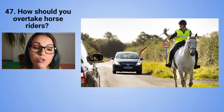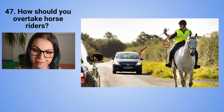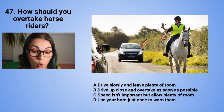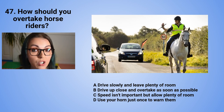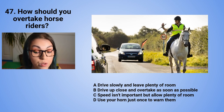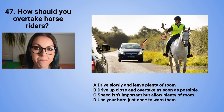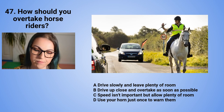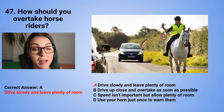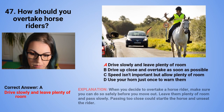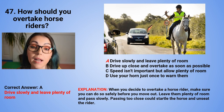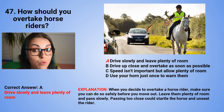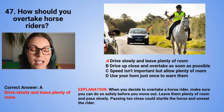Question 47: How should you overtake horse riders? A. Drive slowly and leave plenty of room. B. Drive up close and overtake as soon as possible. C. Speed is not important but allow plenty of room. Or D. Use your horn just once to warn them. The correct answer is A — drive slowly and leave plenty of room. When you decide to overtake a horse rider, make sure you can do so safely before moving out. Leave plenty of room and pass slowly. Passing too close could startle the horse and unseat the rider.